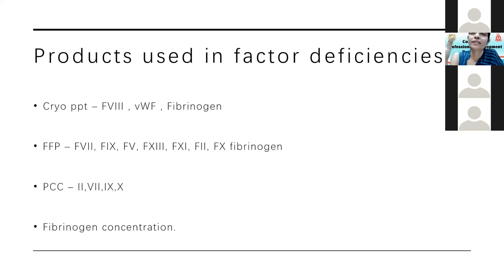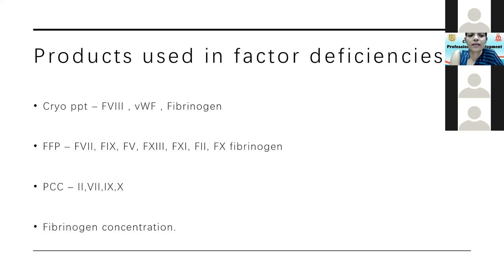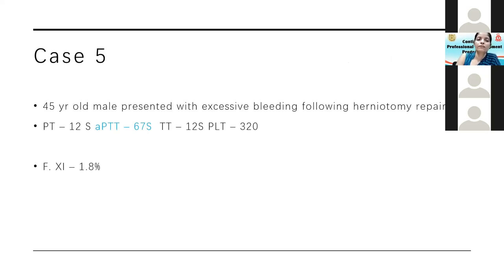If an adult presents with undiagnosed haemophilia and you don't know whether it's type A or B — you can only see prolonged APTT with normal PT — it is better to give FFP than cryoprecipitate because FFP contains all clotting factors, covering both possibilities. Prothrombin complex concentrate (PCC) contains factors II, VII, IX, and X — used for factor II deficiency and for reversing warfarin overdose, where these factors are also deficient. PCC is now the treatment of choice for warfarin reversal.